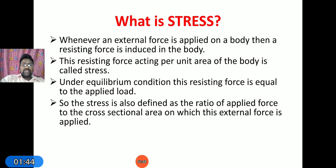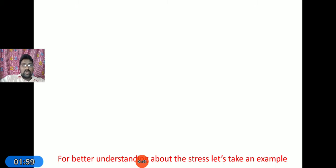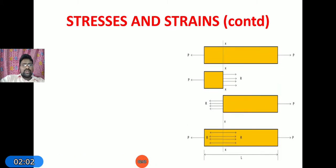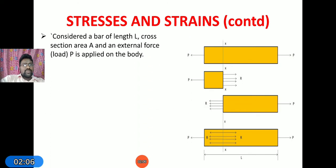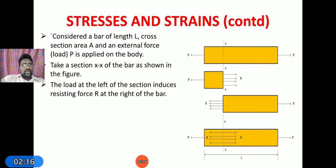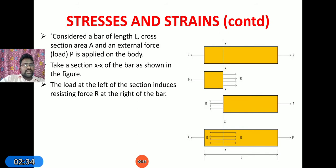Under equilibrium conditions, the applied force and the resisting force are equal. Therefore stress is also defined as the ratio of the applied force to the cross-sectional area of the object. The force operated on the body is also called load. As an example, I have taken a bar with length L and cross-sectional area A. It is submitted to a load P. Due to this load the material gets elongated. Before elongation it will offer some resistance force, as observed in the diagram.